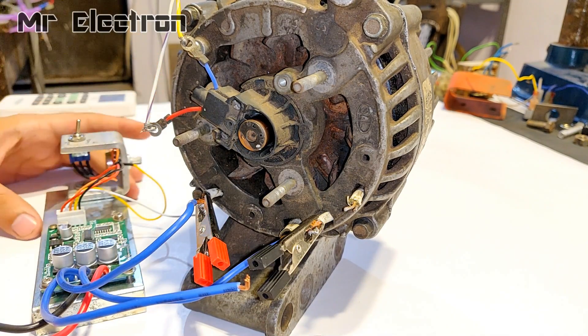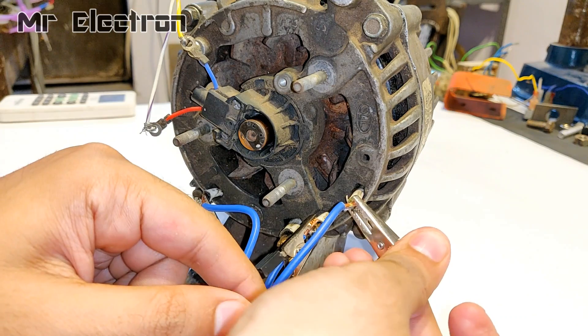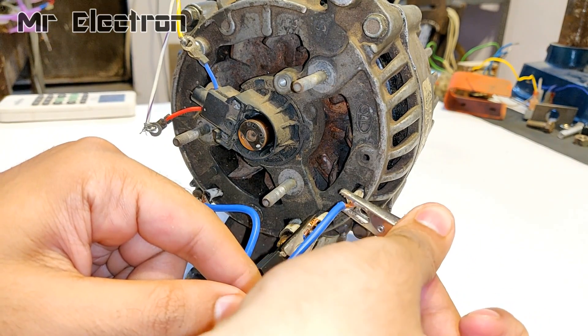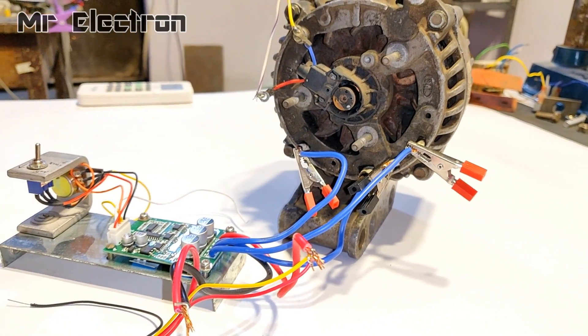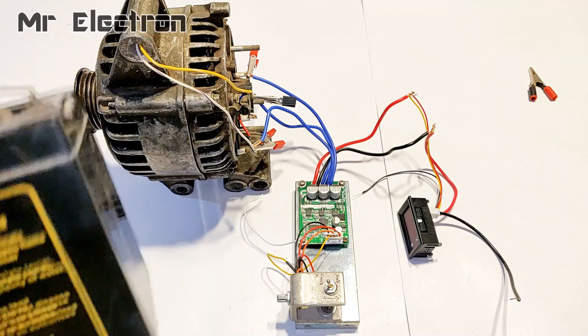Here as you can see I am connecting the BLDC controller, no hall sensor type, to the alternator which you have already seen me connect in a few of my previous videos. So it's time to power up the alternator.